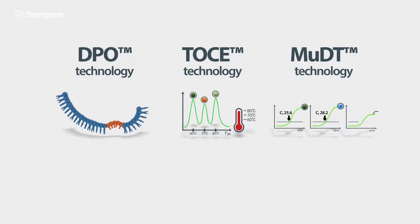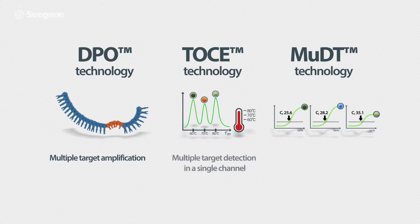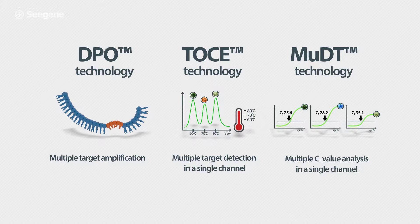MUDT then converts the subtracted fluorescent signal for Flu A into a CT value. In conclusion, MUDT technology, combined with the advantages of DPO and Toast, enables the measurement of target CT values by analyzing fluorescent signals collected at different detection temperatures.